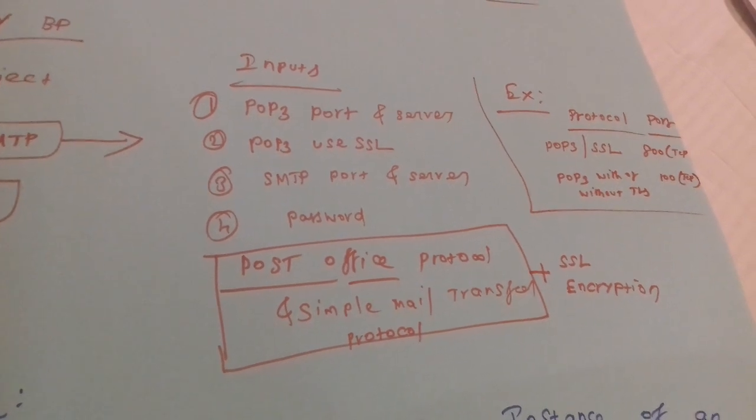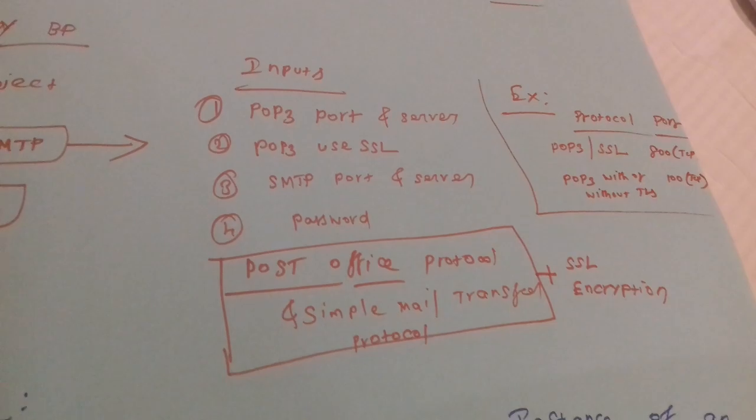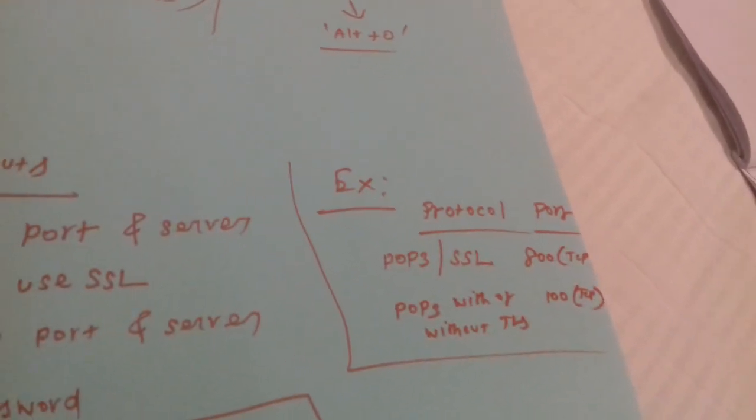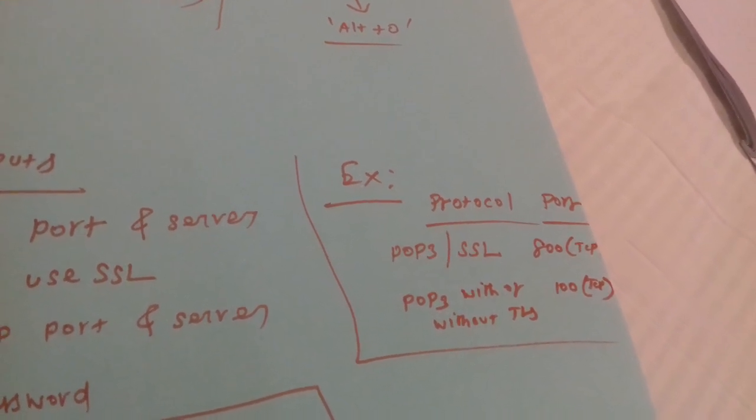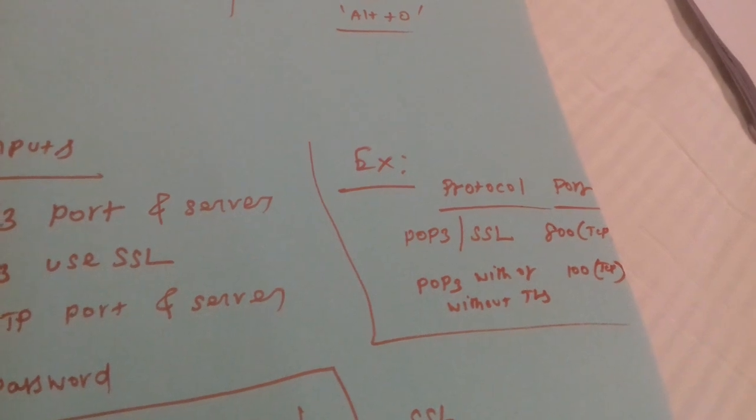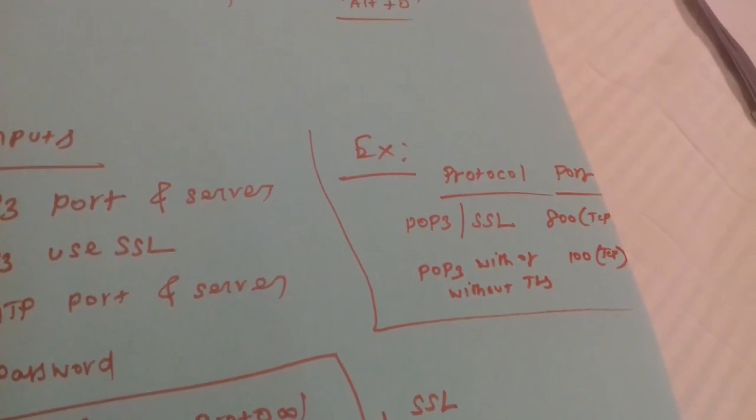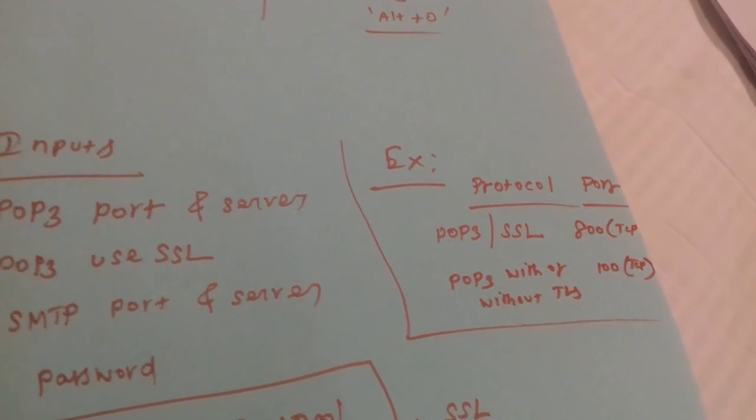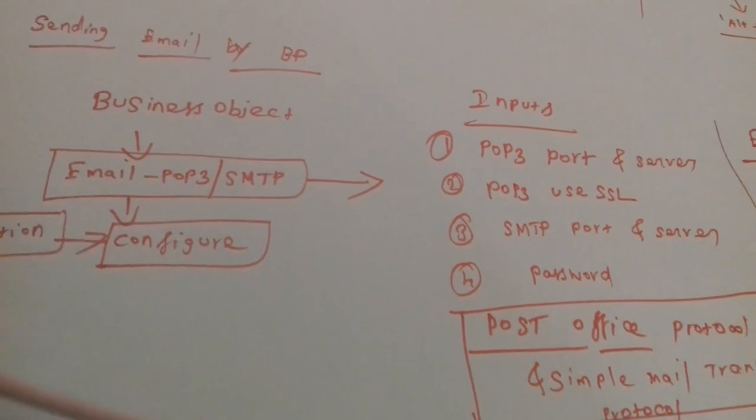SSL encryption. It will be very important with SSL encryption. For example, if you go for protocol POP3, it will have some port of TCP. If you go with POP3 with or without SSL, then you can configure the port accordingly. These types of things you have to make sure when you're sending emails through Blue Prism.